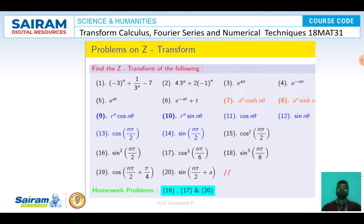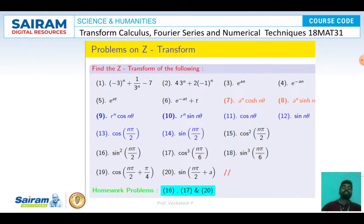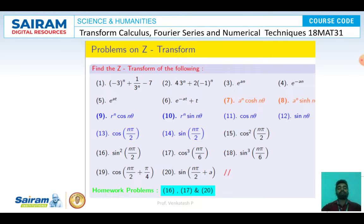The first problem set includes: 1) (3^(N+1)) / (3^N - 7), 2) 4×3^N + 2×(1/3)^N, 3) e^(AN), 4) e^(-AN), 5) e^(AT), 6) e^(-AT+T), 7) a^N cosh(Nθ), 8) a^N sinh(Nθ), 9) r^N cos(Nθ), 10) r^N sin(Nθ), 11) cos(Nθ), 12) sin(Nθ), 13) cos(Nπ/2), 14) sin(Nπ/2), 15) cos²(Nπ/2), 16) sin²(Nπ/2), 17) cos³(Nπ/6), 18) sin³(Nπ/6), 19) cos(Nπ/2 + π/4), and 20) sin(Nπ/2 + A).